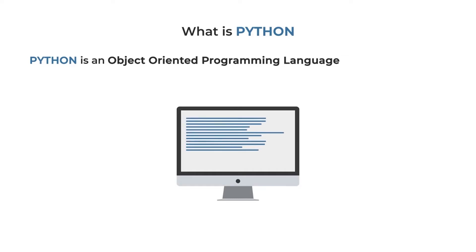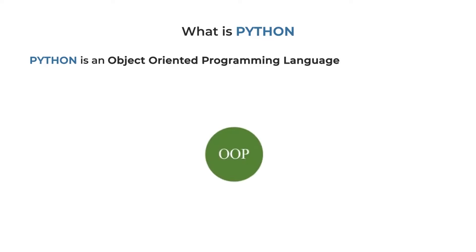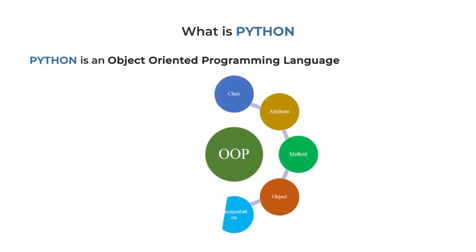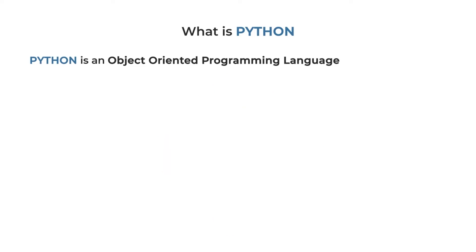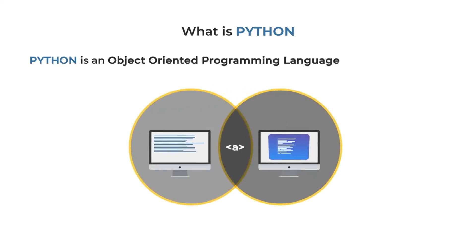Generally, we also do procedures, which are called functions. So if we do procedural programming, we can do that normally. We can do OOP in Python, C++, Java, and C-sharp. Some of the OOP features include class, attribute, method, object, encapsulation, and abstraction. This is all part of the object-oriented programming language.